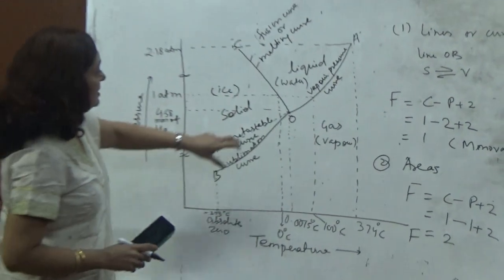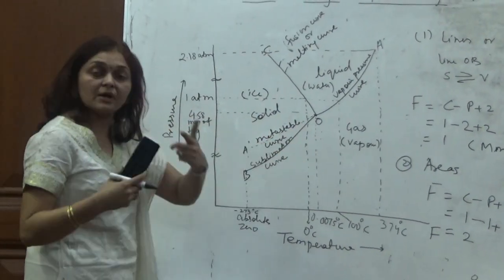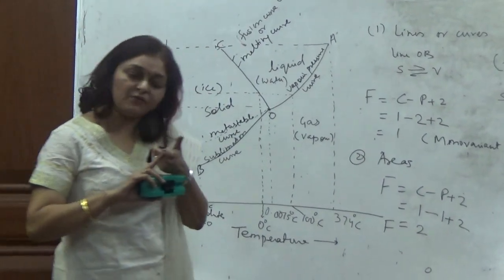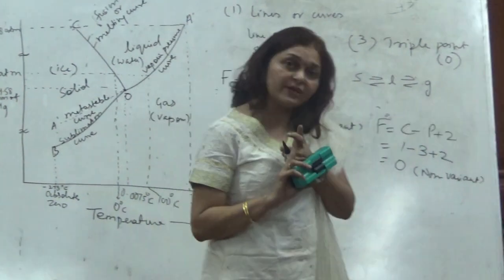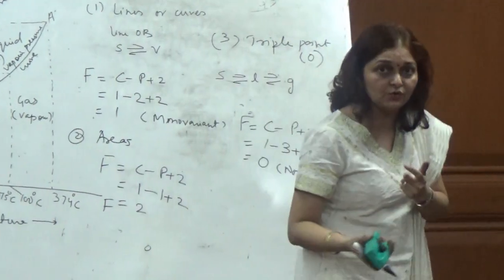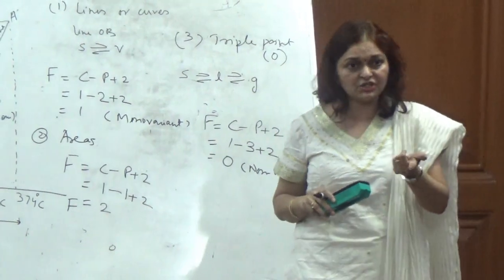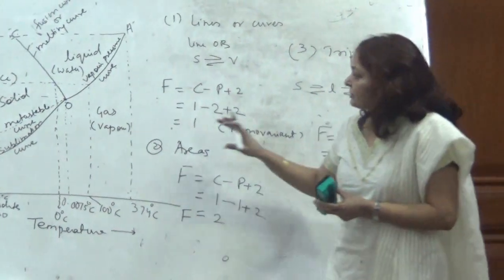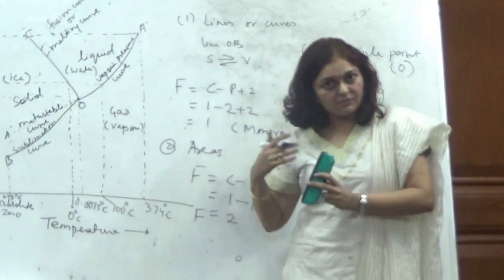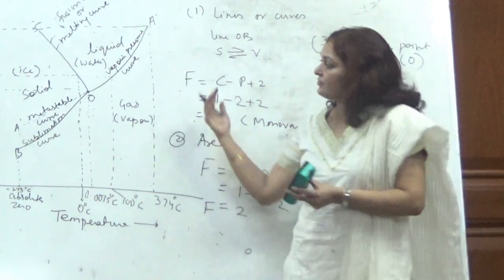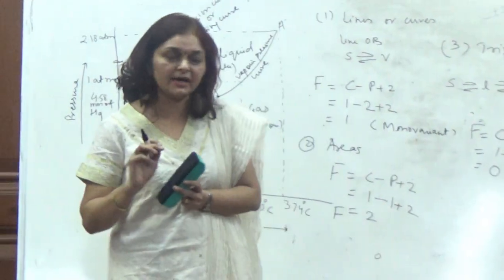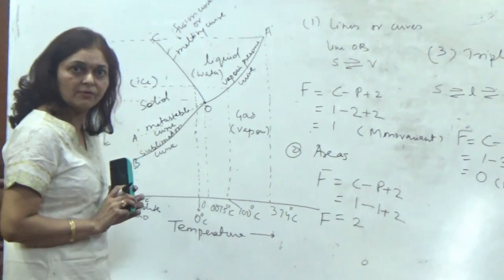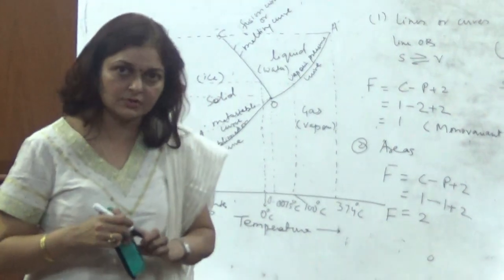Since the system is non-variant at the triple point, it exists only at that specific temperature and pressure. If we want to change either the pressure or the temperature or both, the three phases will no longer coexist — one of the phases will disappear and the system will adopt only two phases. That is why the system is non-variant at the triple point. Thank you.